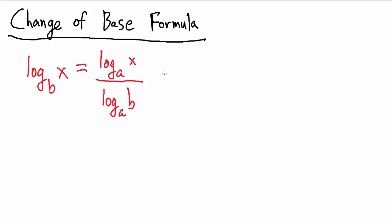So where does this formula come from? Why is this true? Let's come off to the side and see. Say we have the base B log of X, and let's just call this Y. So base B log of X equals Y. The equivalent exponential equation that corresponds to this is X equals B to the Y. So if we say the base B log of X equals Y, that's the exact same thing as saying X equals B to the Y.